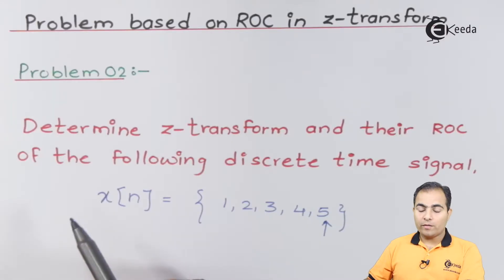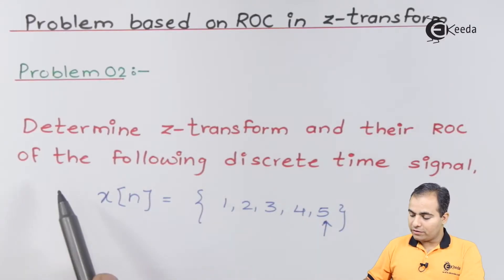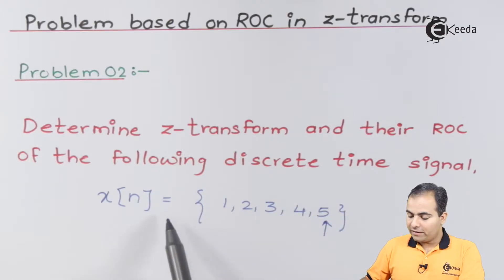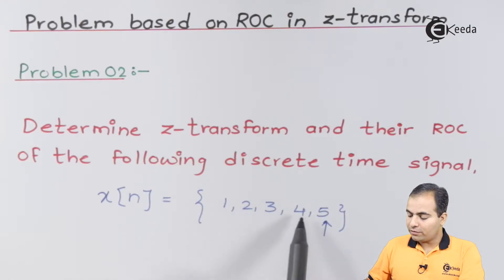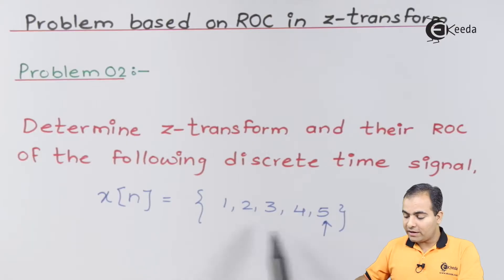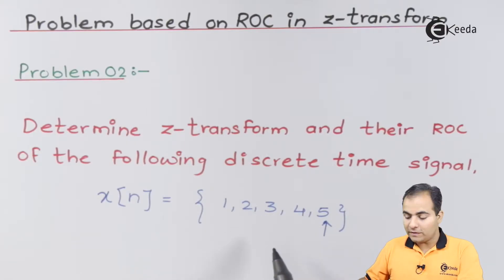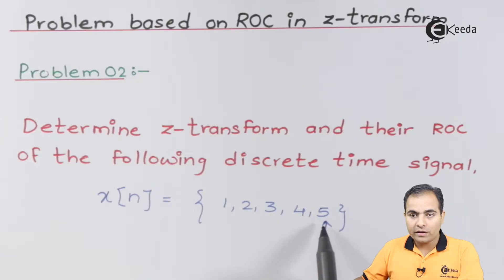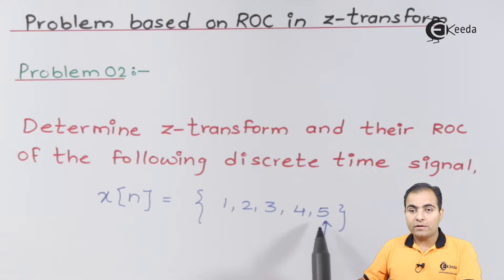Problem number two: determine the Z-transform and its ROC of the following discrete time signal, where the sequence is {1, 2, 3, 4, 5}. This is similar to the previous numerical, but here the origin is placed on the last sample.